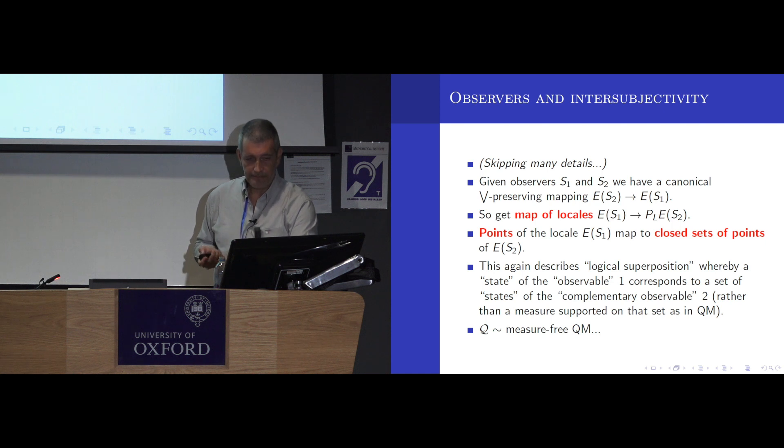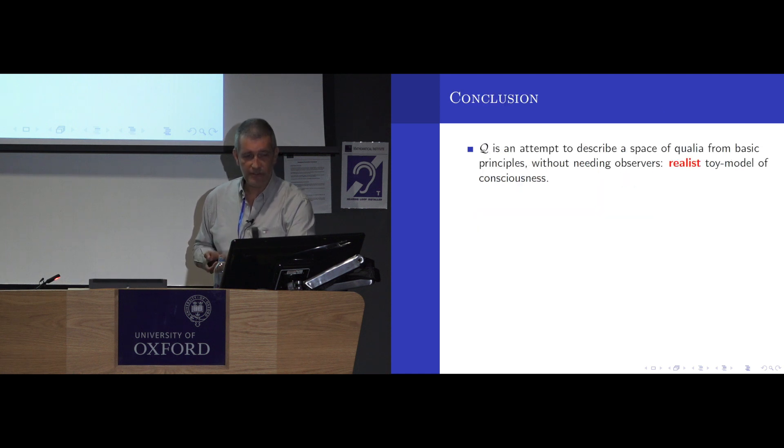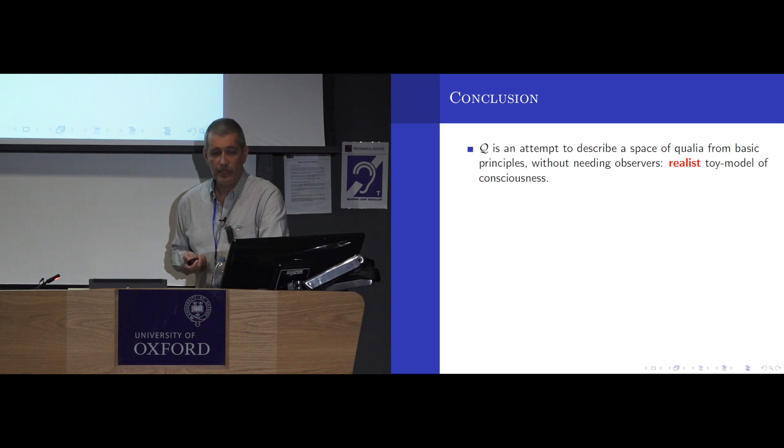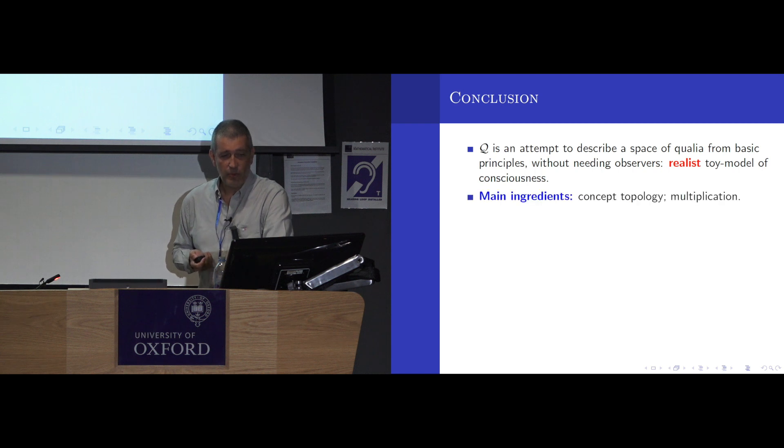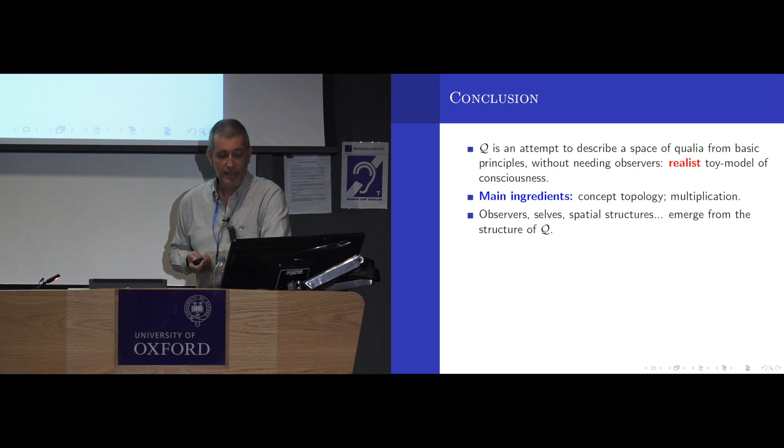So, in conclusion, what this Q is, is an attempt, a toy model, to describe a space of qualia from very simple principles without needing observers. So, it's a realist toy model of consciousness. Whether or not it's realistic, it's a different story, but you can tell me your opinions about this. The main ingredients were a concept topology and a multiplication that caters for a subjective time. And then, a lot of structure, observers, cells, spatial structures, they emerge from the structure of Q.